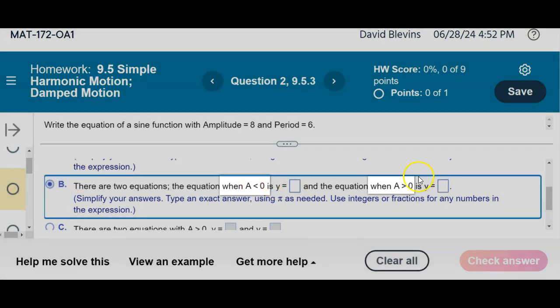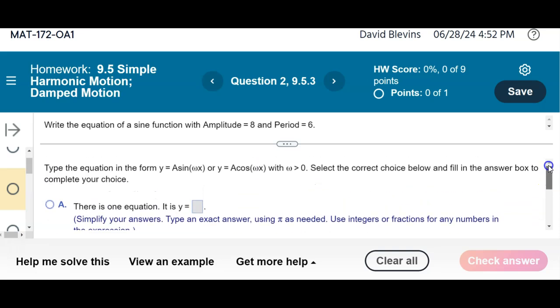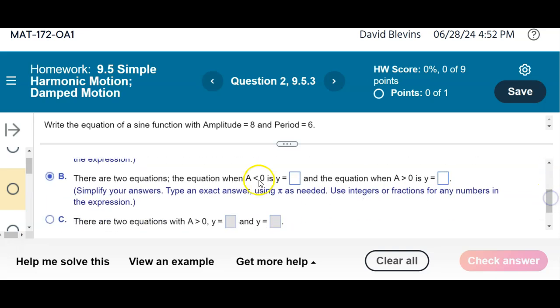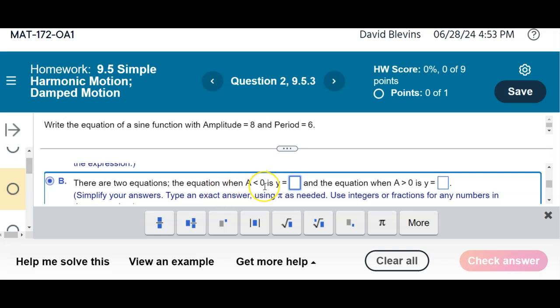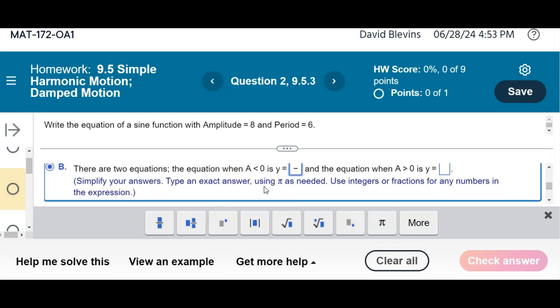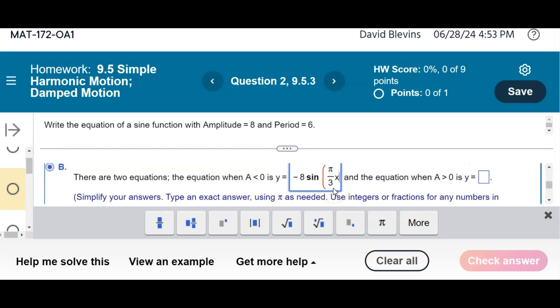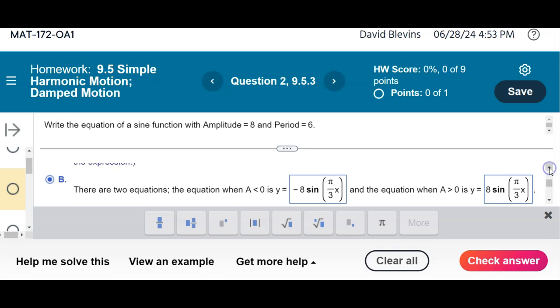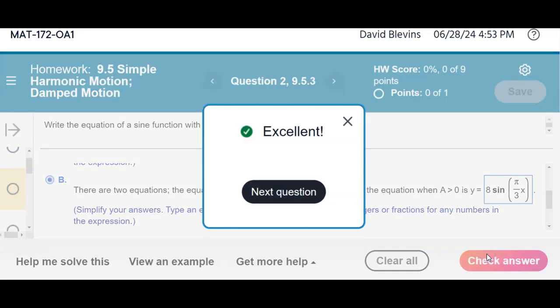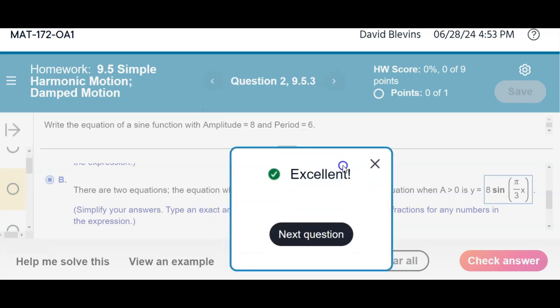A is the number out in front of that sine curve in the notation they're giving us. Omega is positive, so it's got to be here. When A is negative, we get negative 8 sine of π/3 times x. I'm going to highlight all that, copy, and paste it here. When A is positive, we get this. When A is negative, we get this. So there's our two sine curves that are possible with an amplitude of 8 and a period of 6.